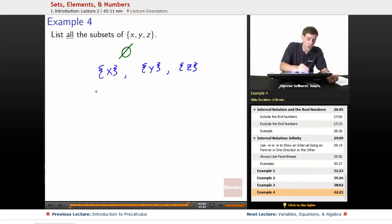Now, we can go with the two element ones, and we can say, all right, well, x, y, that's going to be a subset. What about x, z? And then finally, y, z.